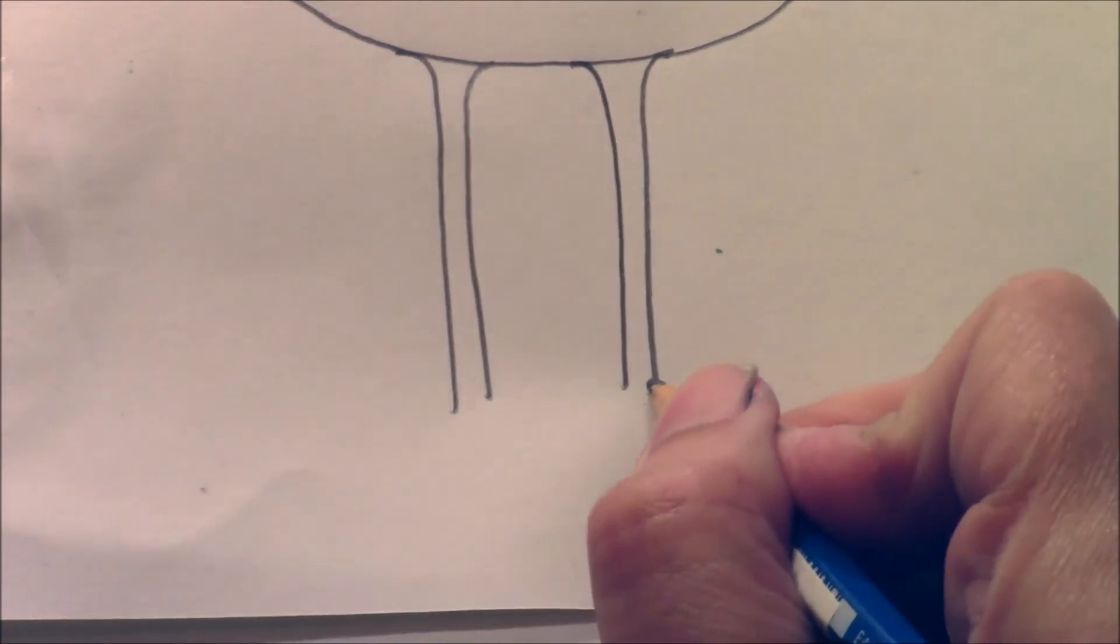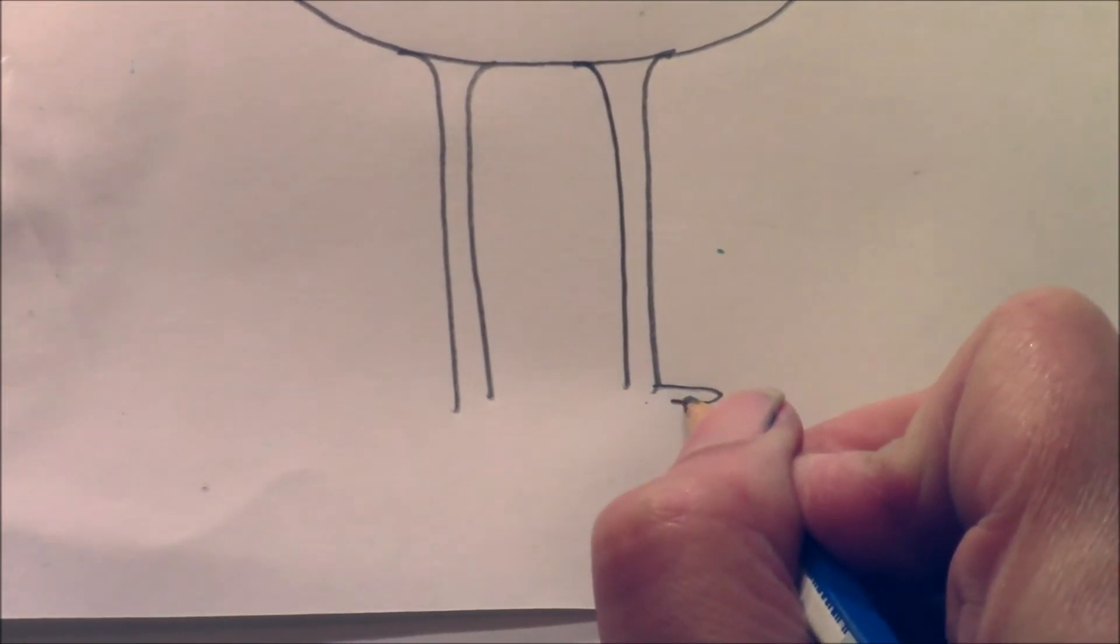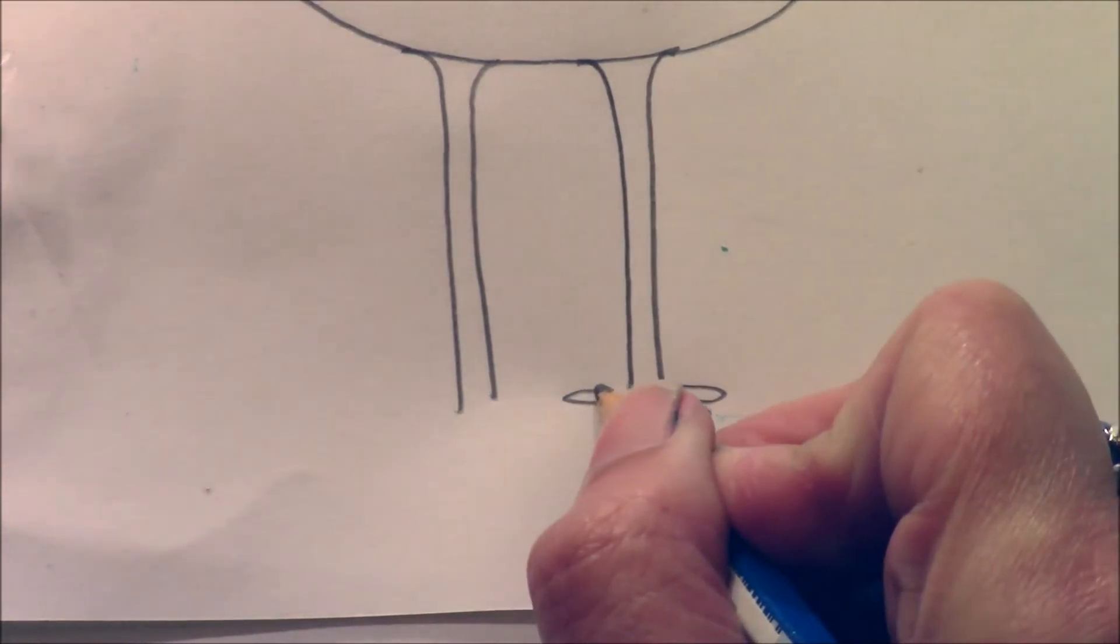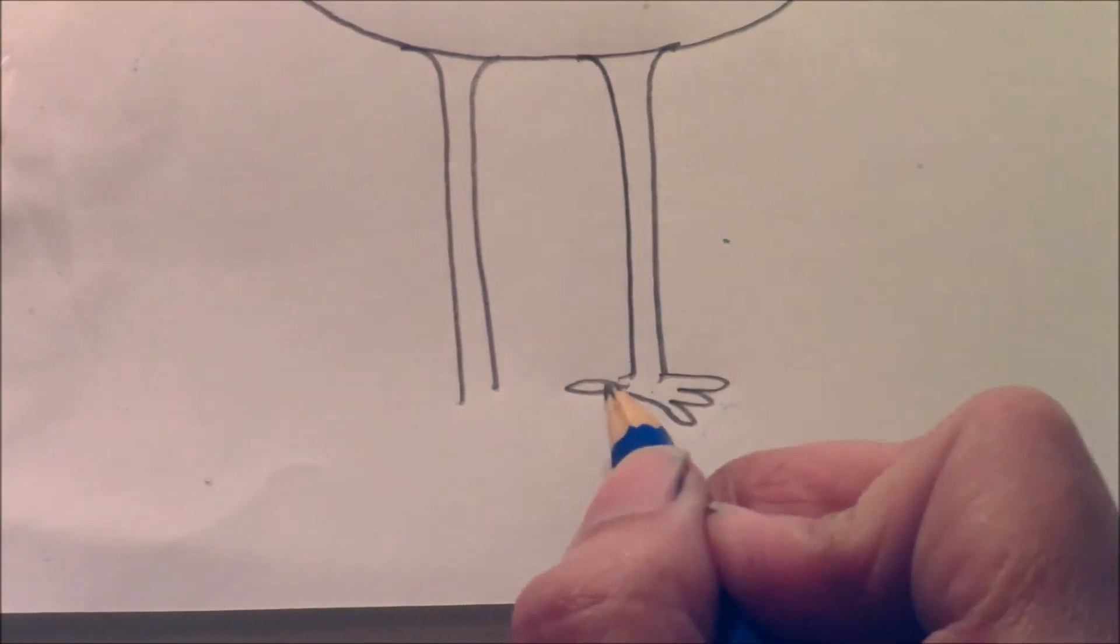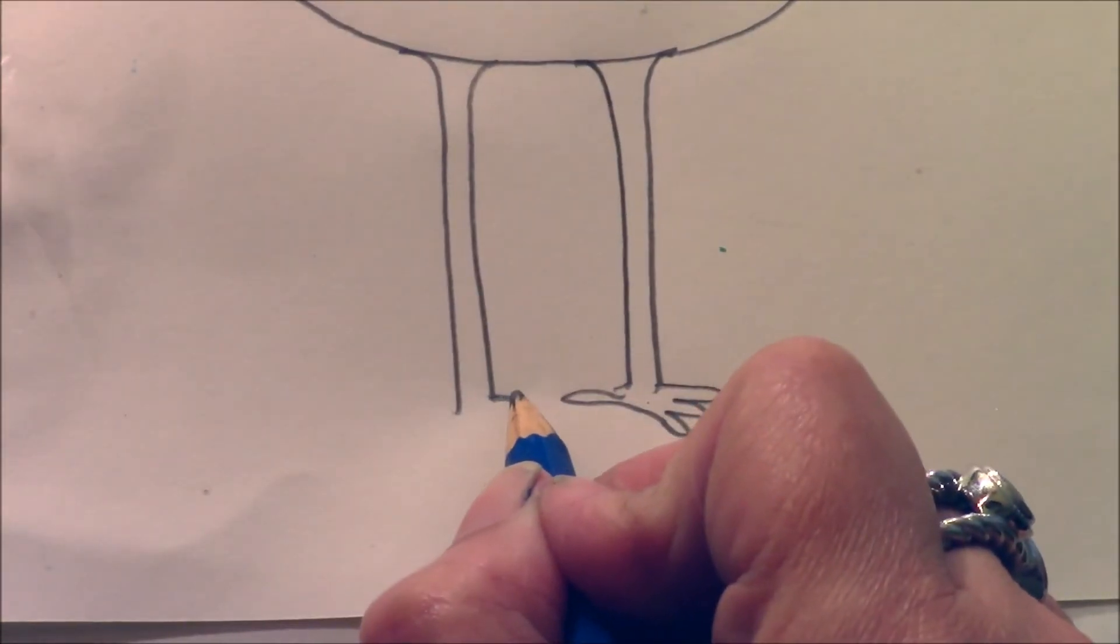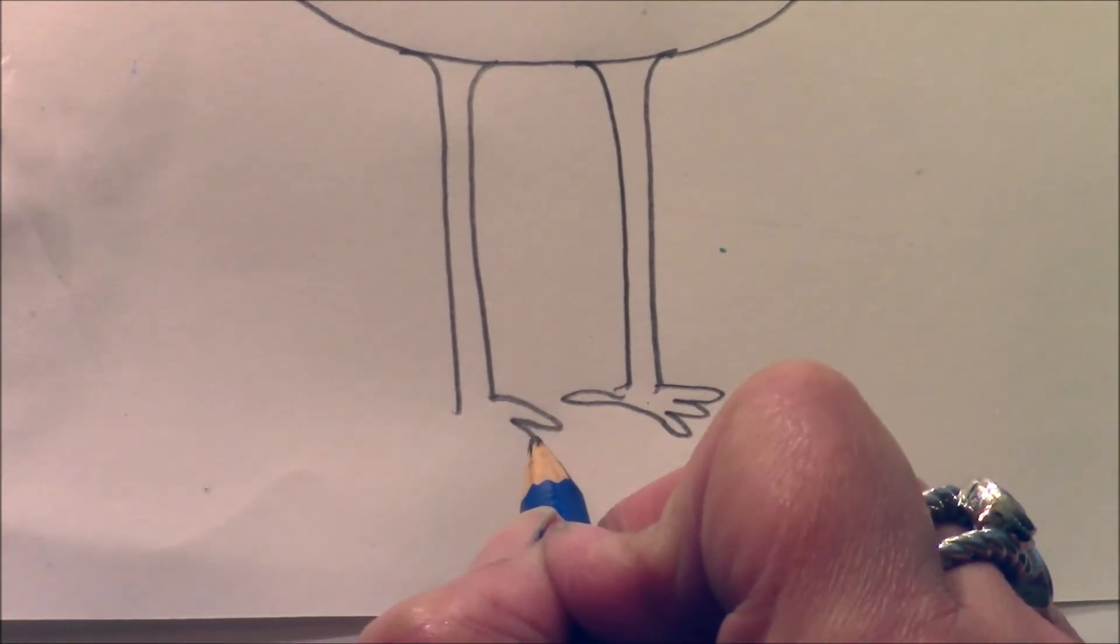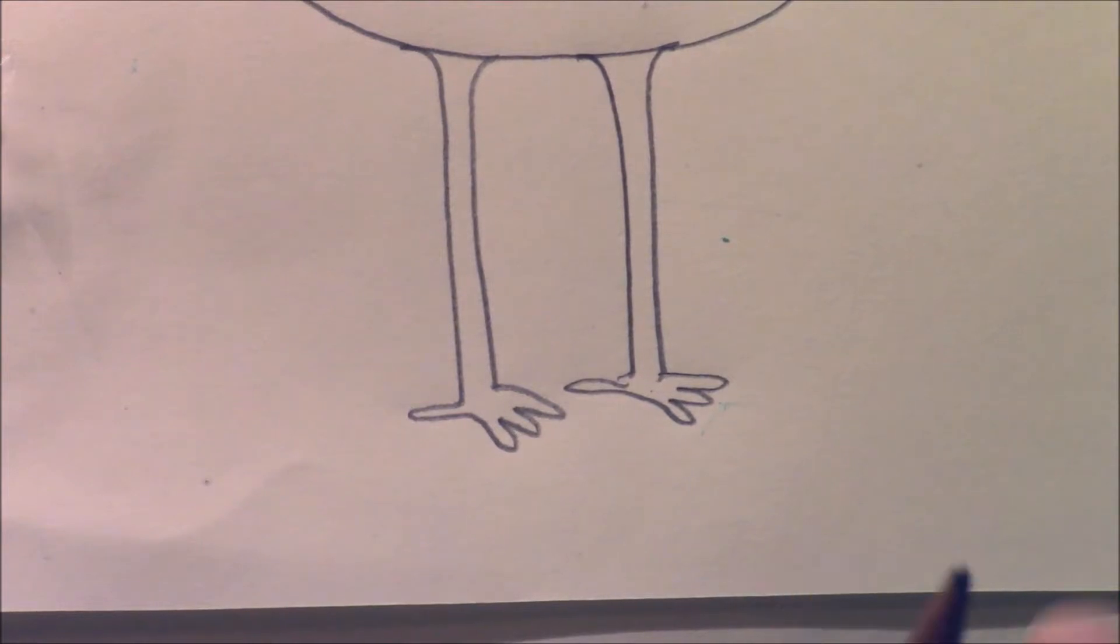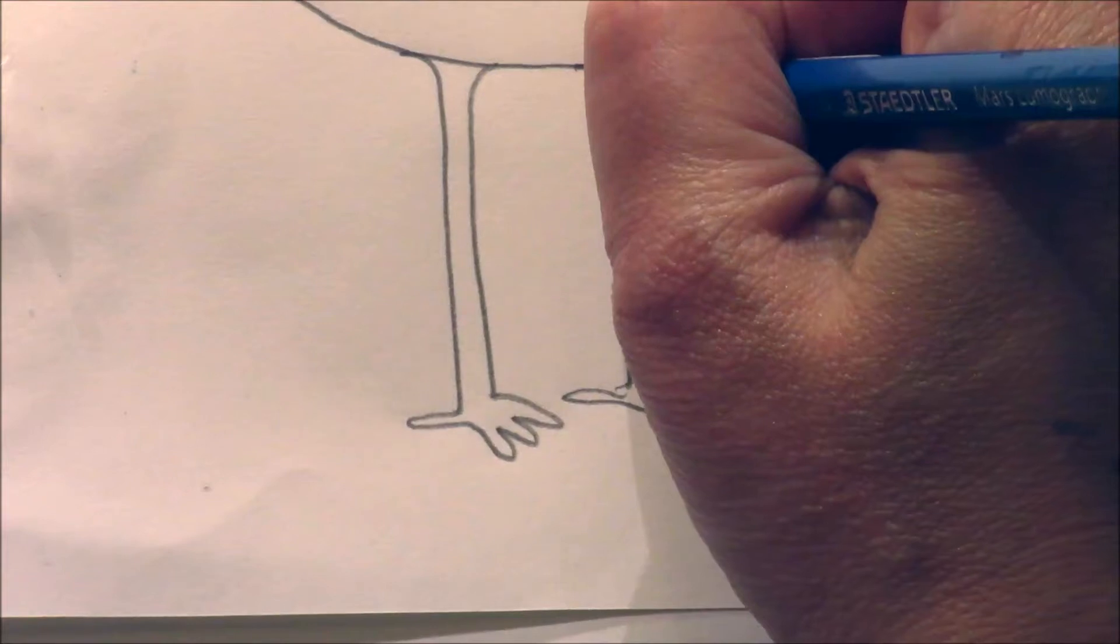So I'm going to go ahead and do the feet. So I just do like little claws, almost like little fingers. And then a little, most birds have that claw on the back. It helps them maintain their balance when they're standing on a tree trunk, and they have something to grab onto to hold onto the tree.